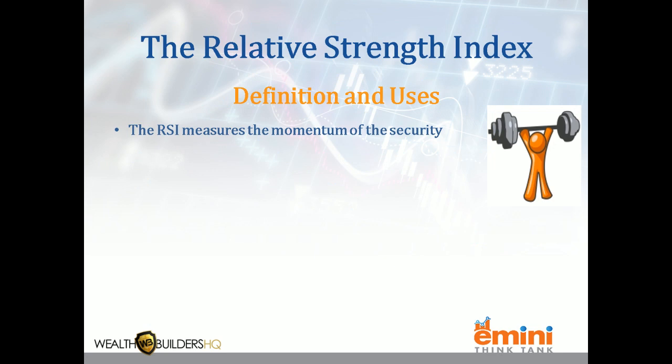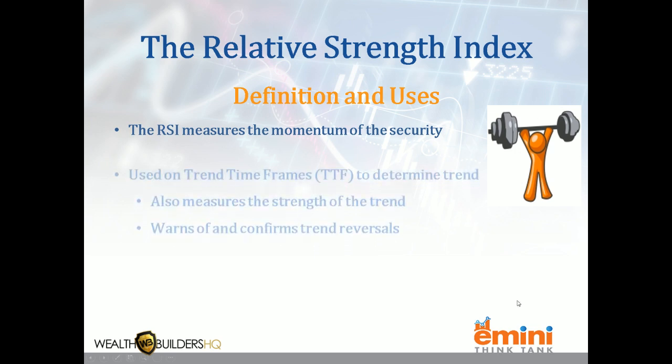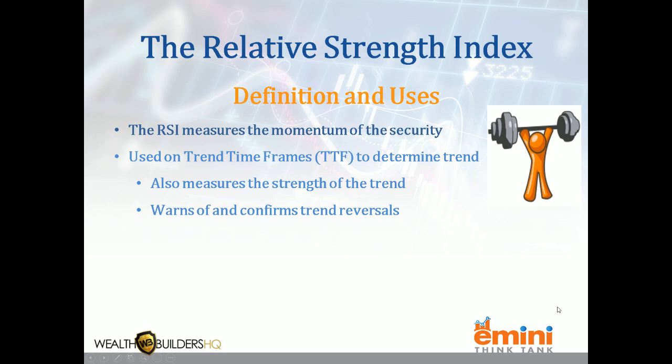The RSI, or Relative Strength Index, measures momentum — how powerful and how fast price is moving in a particular direction. It can measure momentum both to the upside and the downside. On the trend time frame, we use it to help determine which direction prices are going, and also to see if the trend is strong or getting weak. Weak trends tend to pause or even reverse.